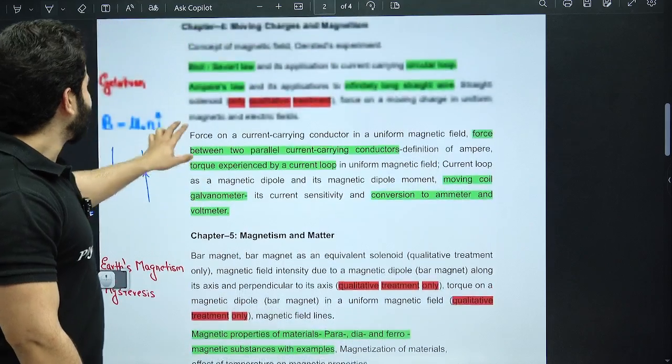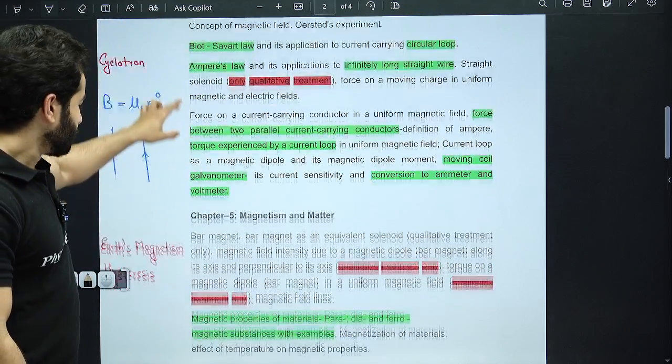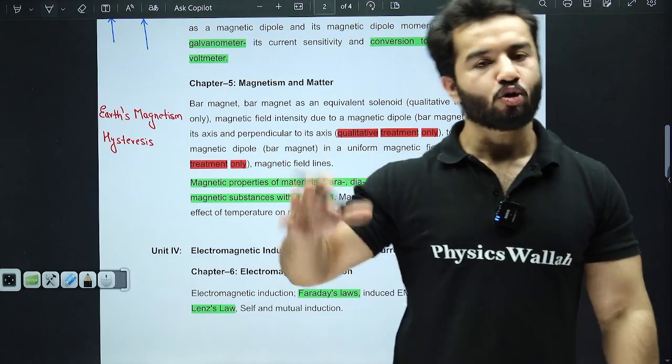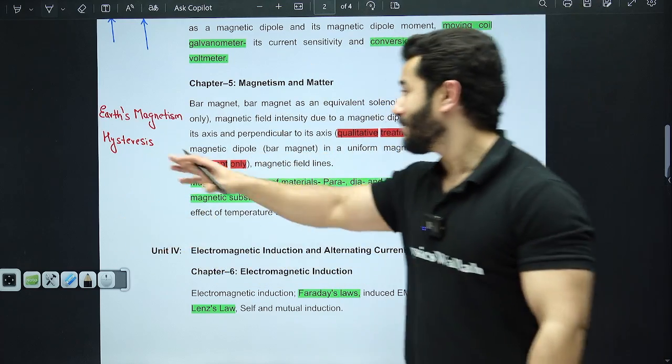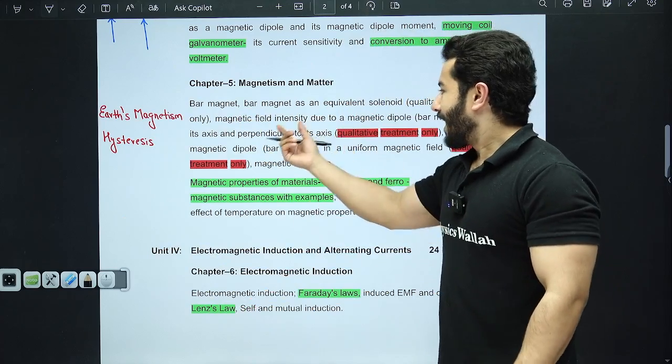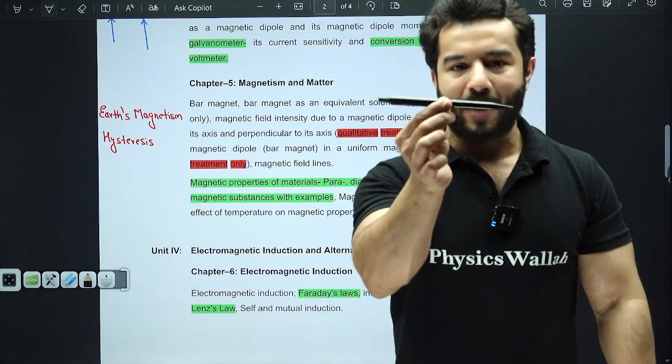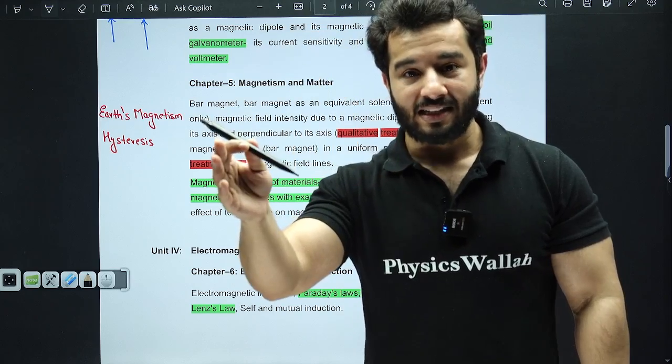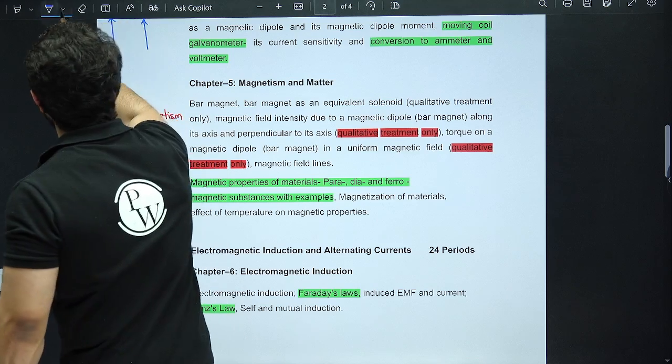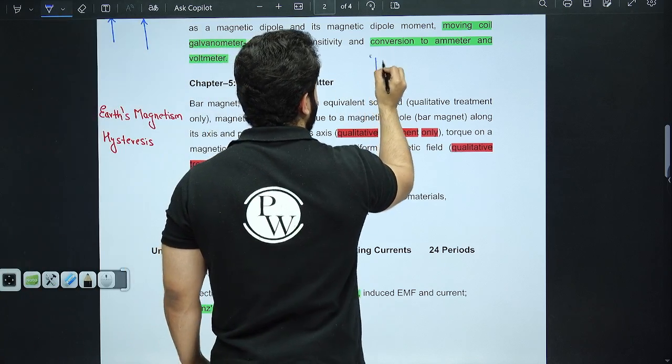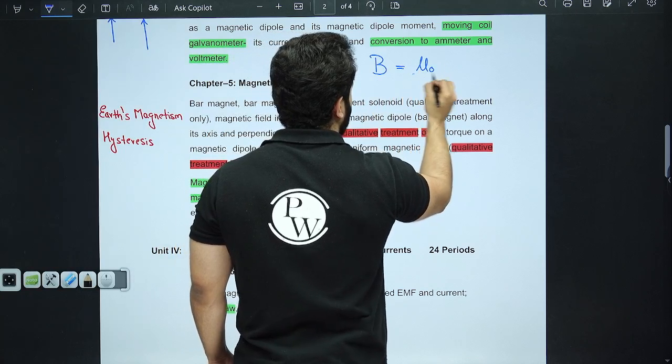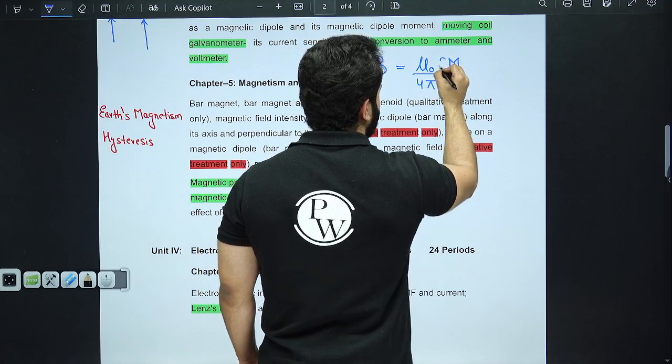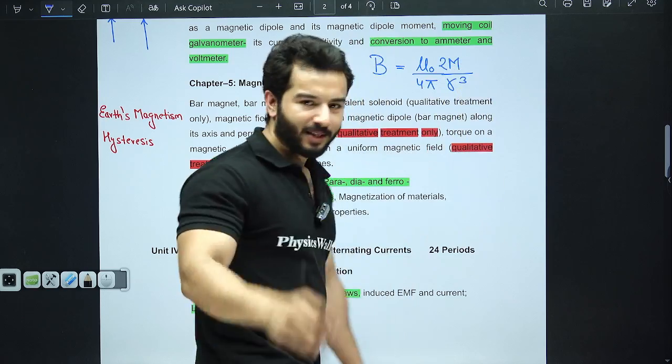In magnetism, by the way, cyclotron has been deleted. From magnetism and matter, earth's magnetism—the whole topic has been deleted. So you don't have to worry about it. Hysteresis loop has been deleted. Other than that, the magnetic field due to a bar magnet, that is magnetic dipole, its derivation has also been deleted.